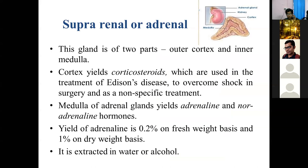The second gland is the suprarenal or adrenal gland, present over the kidney, with two parts — outer cortex and inner medulla. The cortex has three zones: zona glomerulosa, which secretes mineralocorticoids such as aldosterone, helping maintain the renin-angiotensin-aldosterone system; zona fasciculata, which secretes glucocorticoids used in treatment of diseases like Addison's disease; and zona reticularis, which secretes sex corticoids.